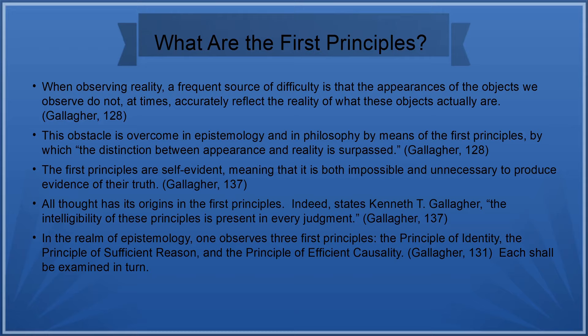What are the first principles? When observing reality, a frequent source of difficulty is that the appearances of the objects we observe do not, at times, accurately reflect the reality of what these objects actually are. This obstacle is overcome in epistemology and in philosophy by means of the first principles, by which the distinction between appearance and reality is surpassed. The first principles are self-evident, meaning that it is both impossible and unnecessary to produce evidence of their truth. All thought has its origins in the first principles.